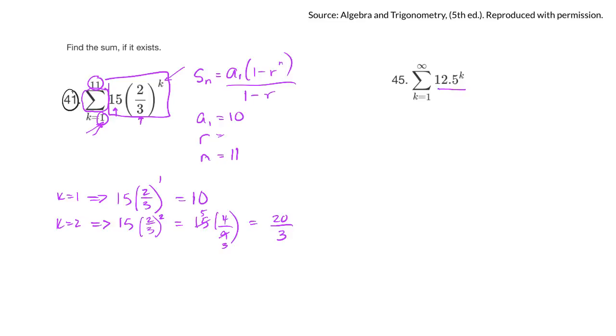Now to find my ratio, I can take any term and divide it by the term before. So the second term is 20/3, and I'm going to divide that by the first term, which is 10.